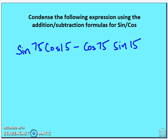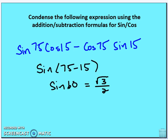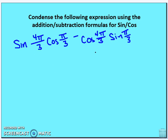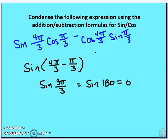Now condensing sine expressions. First: sine 75° · cosine 15° − cosine 75° · sine 15° condenses to sine(75° − 15°) = sine 60° = √3/2. In radians: sine(4π/3) · cosine(π/3) − cosine(4π/3) · sine(π/3) condenses to sine(4π/3 − π/3) = sine(3π/3) = sine(π) = 0.